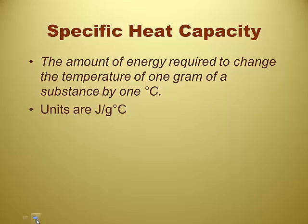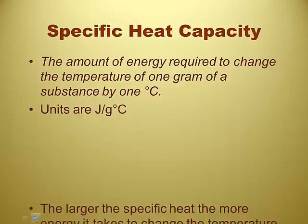The units wind up being kind of complex because it's an amount of energy, so joules, per gram for every degree Celsius they change. So it's joules per... Well, that's what the definition says too. The amount of energy for one gram, one degree Celsius.